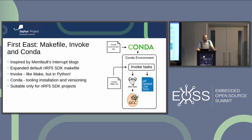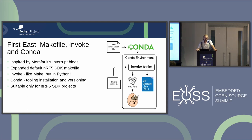In that kind of environment, the first version of EAST came out — at the time it was not named like that, it was just internal tooling. We were 100% inspired by what Memfault was showing on their interrupt blogs. We took the default NRF5 SDK makefile, expanded it so it could accept target shape, the name of the board, software and hardware versions that would be baked into the final image, optimization flags, and so on. We then used a tool called Invoke to call that makefile. For those who don't know, it's a tool written in Python, very similar to make — you create a command, write help, and you see that command there. It also supports configuration via YAML file. This worked fine for a while. We still had to solve the tooling problem, so we used Conda, which is a tool for versioning and installing Python packages but can also do that for any binary — like GCC, make, and all our other Python-related tools.